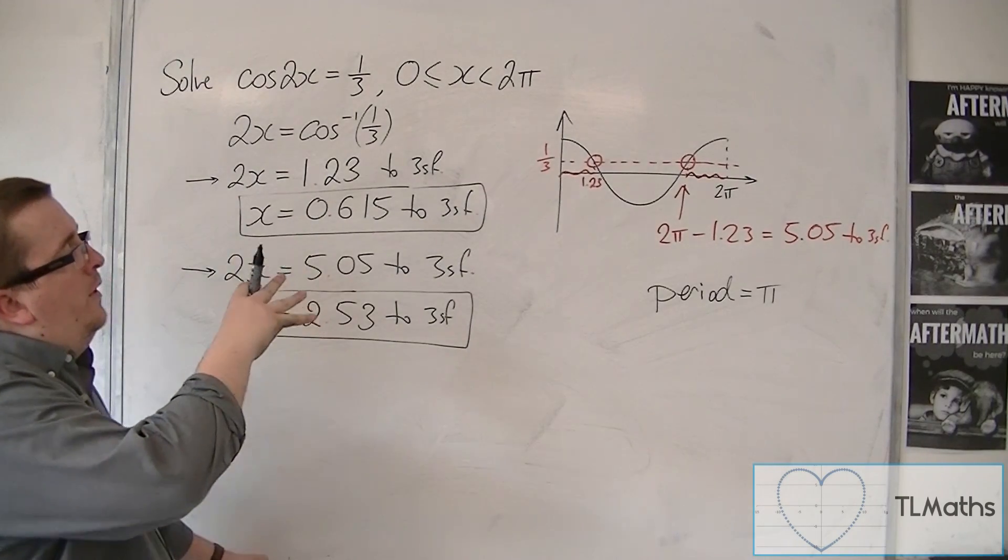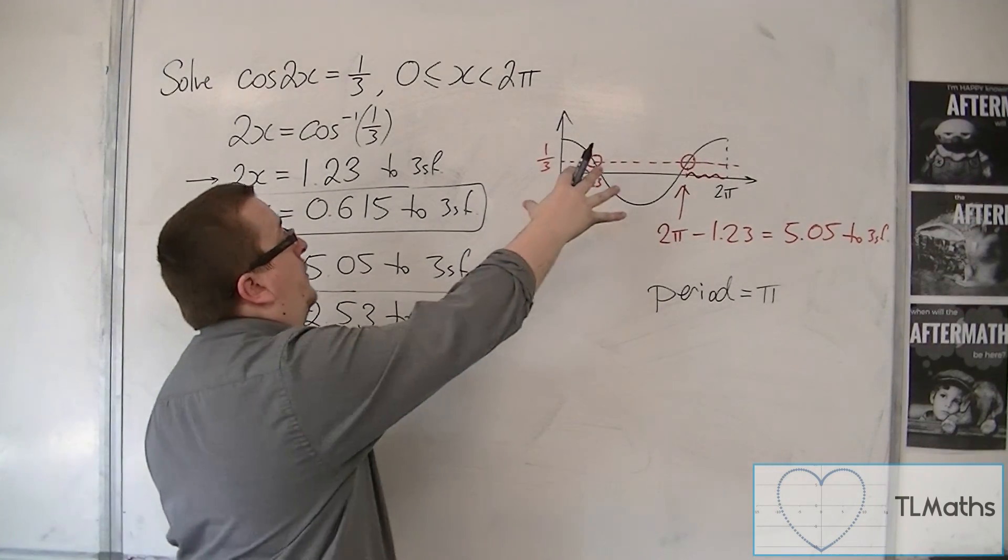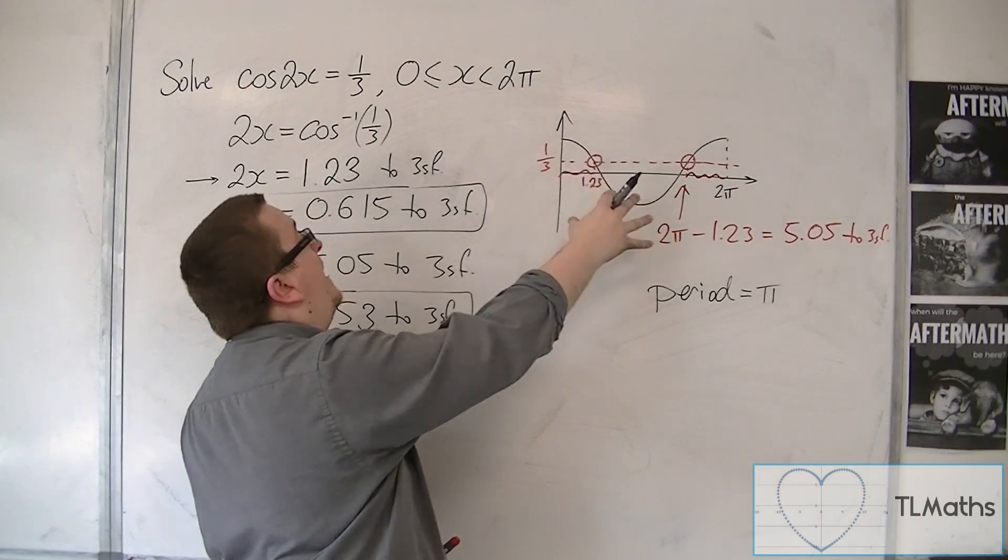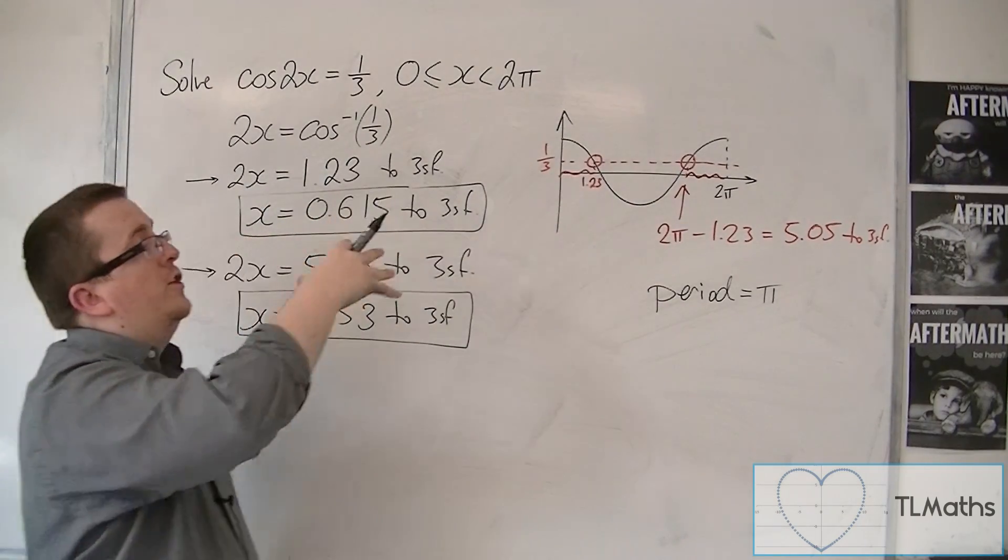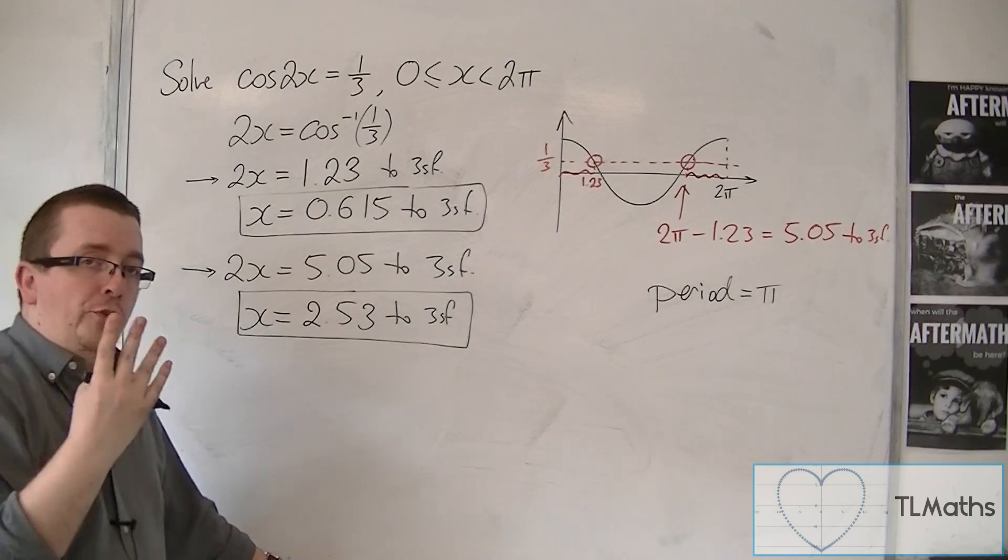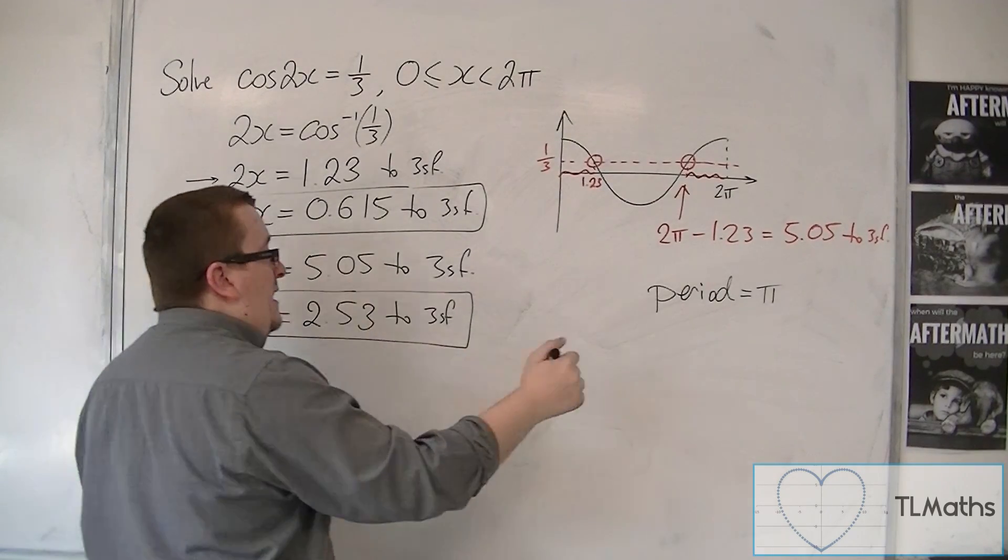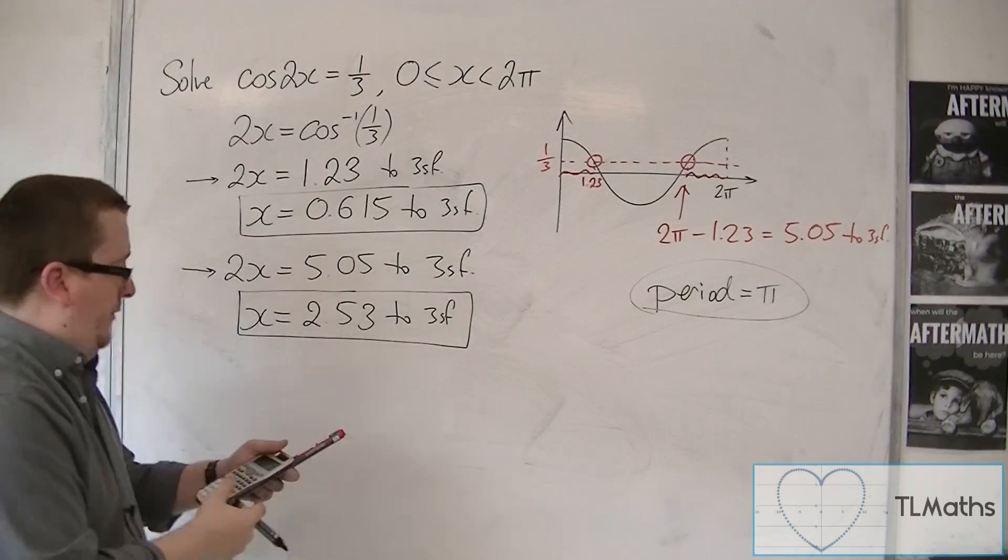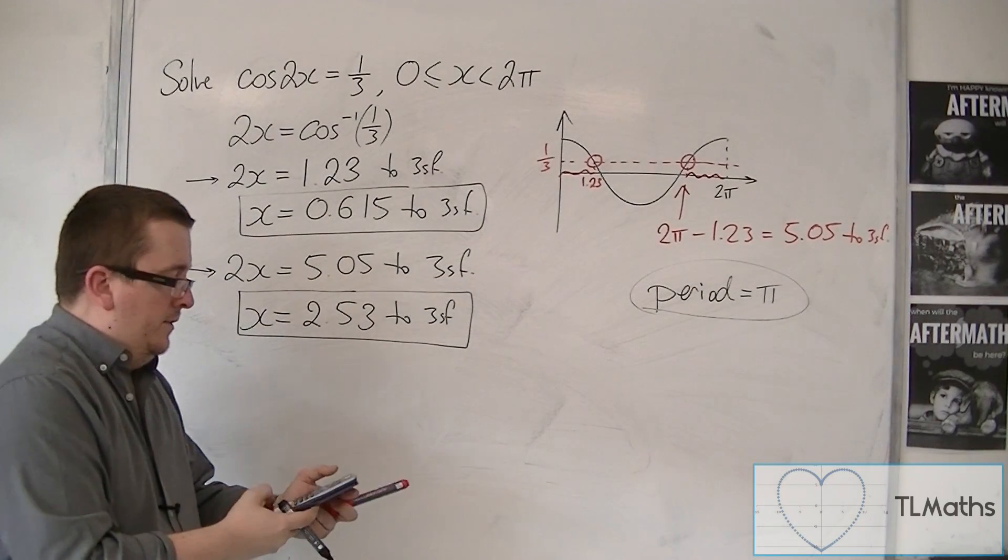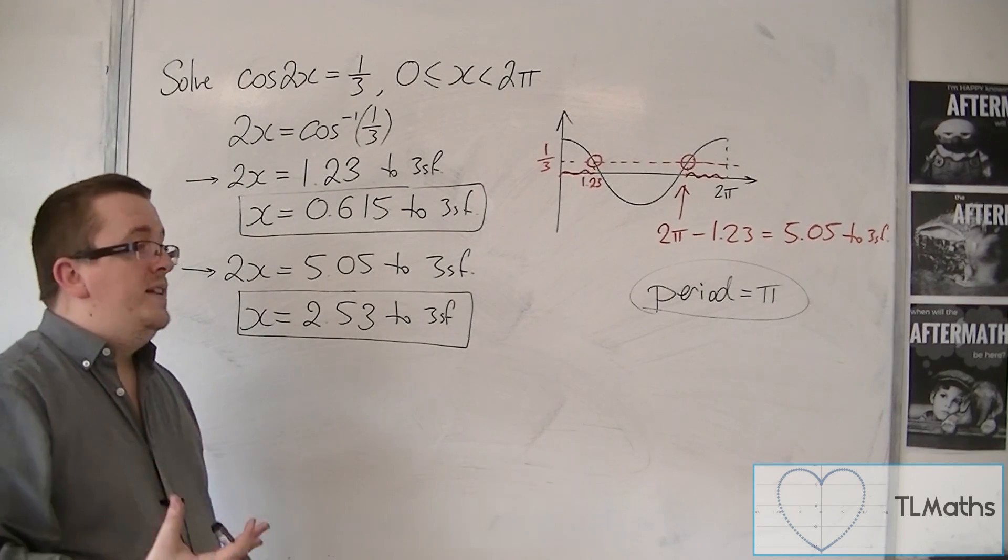And if I'm solving cos of x between 0 and 2 pi, I expect two solutions. So for cos of 2x, I expect four solutions. I've got two of them. So I can add the period onto these two answers to get the other two that I need.